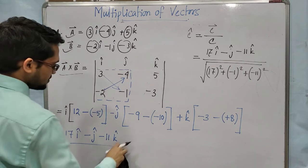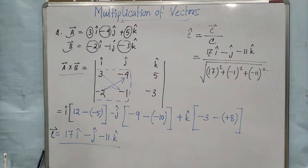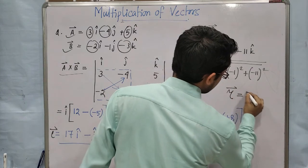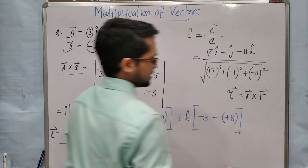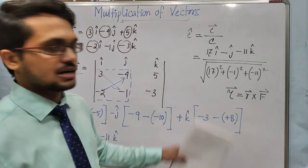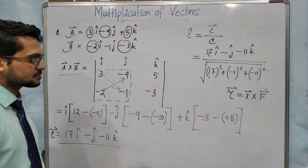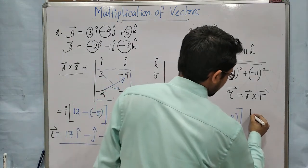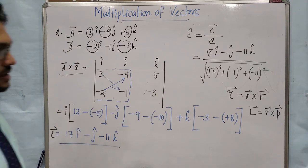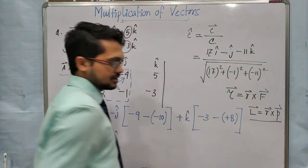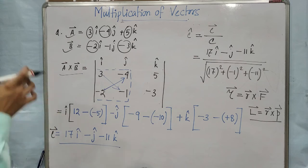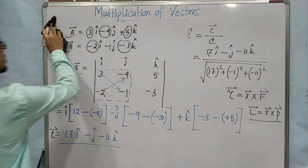In class 10 you had seen torque — torque equals basically the cross product: τ = r cross F. Remember that R cross F and F cross R are not equal. R cross F is the torque formula — do not write F cross R. Another is angular momentum L = r cross p. You will read this in the angular motion chapter in class 11.